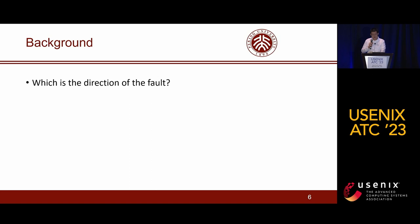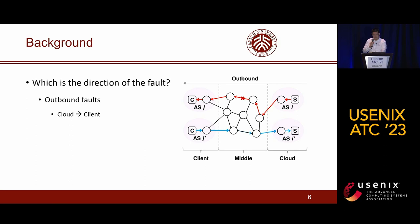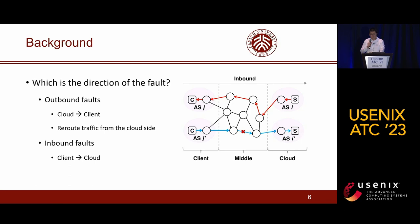The third question is: which is the direction of the fault? From the perspective of CSPs, network faults can be classified into outbound faults and inbound faults. Outbound faults refer to faults occurring on the path from the cloud to the client; to deal with this, CSP must reroute traffic from the cloud side. On the other hand, inbound faults refer to faults occurring on the path from the client to the cloud, and CSP must reroute traffic from the client side. Therefore, it is critical to identify the direction of the fault as CSP takes different strategies to deal with each type.